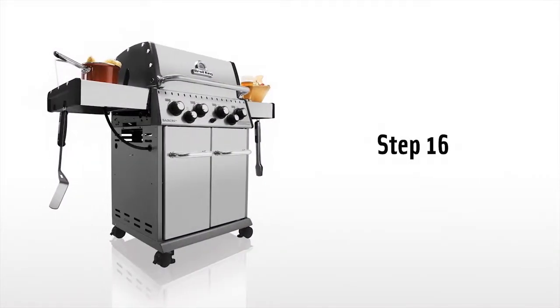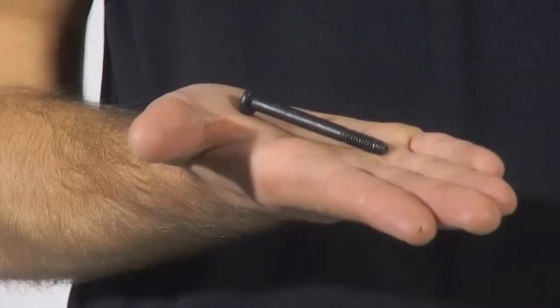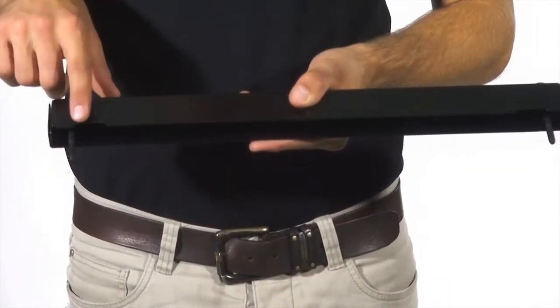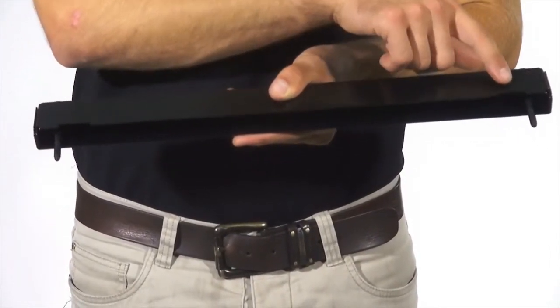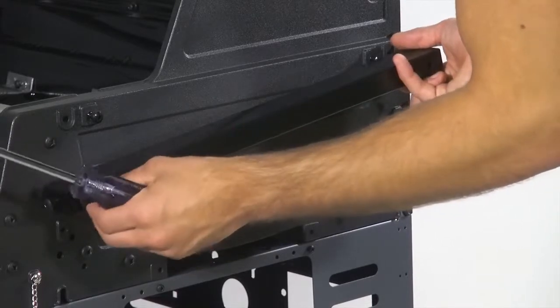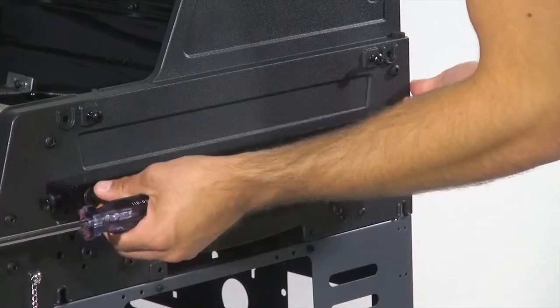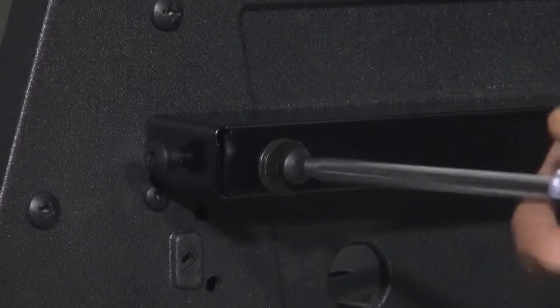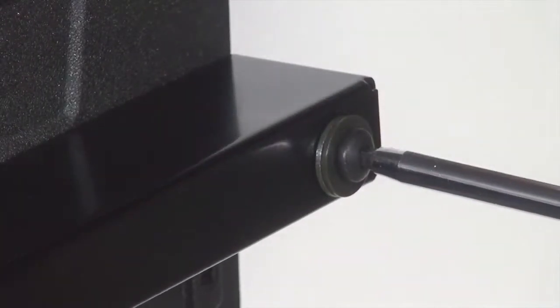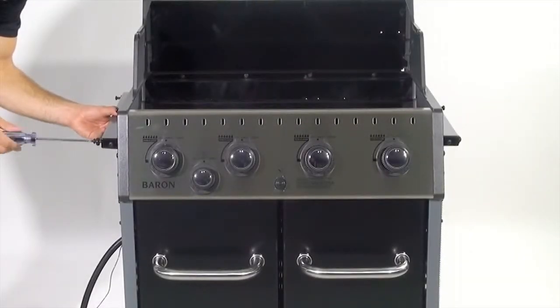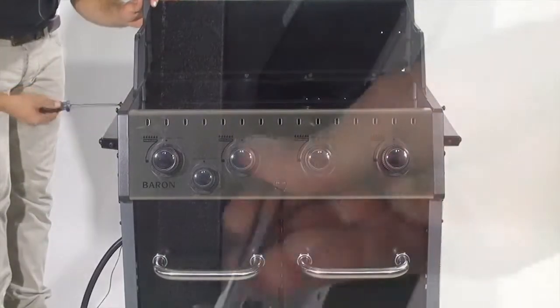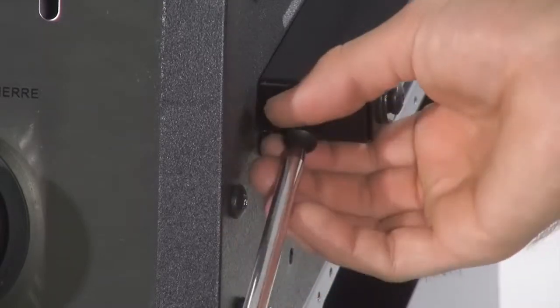Step 16. Attach the shelf brackets to the cook box using the four long bolts and eight washers. Note the notches on the shelf bracket should be installed facing downward. Please make sure not to over tighten. Remove all four screws from both ends of the shelf brackets.